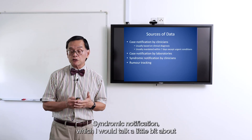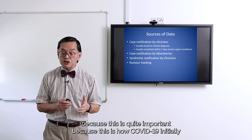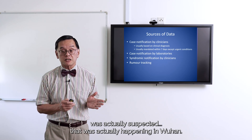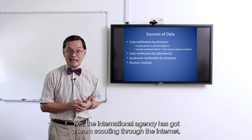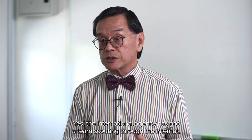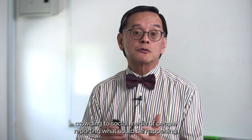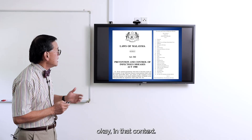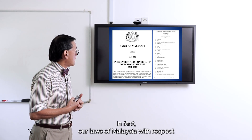Syndromic notification is quite important because this is how COVID-19 was initially suspected to be happening in Wuhan. Rumour tracking is also used — international agencies have teams scouting the internet and social media for people reporting what could be happening in a given context.